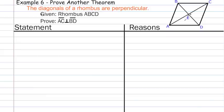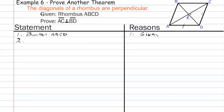Our first statement, as always, is our given — rhombus ABCD, reason: given. The second step is to state that segment AD is congruent to segment CD. All sides of a rhombus are congruent, so we state AD is congruent to CD, and the reason is the definition of a rhombus.